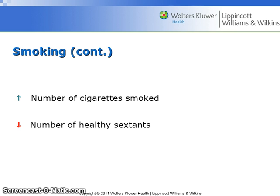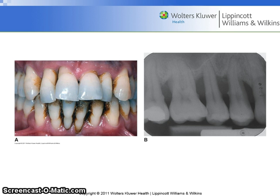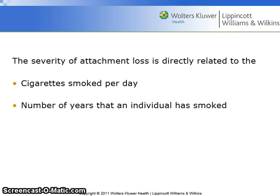The greater the number of cigarettes smoked, the lower the number of healthy sextants in the patient's mouth. Comparing smokers with non-smokers: smokers have more attachment loss, more gingival recession, more alveolar bone loss, a greater number of deep pockets, more furcation involvement, and more tooth loss. Figure 11.1 on page 196 of your textbook shows a 37-year-old male cigarette smoker with 20 pack-years of smoking.